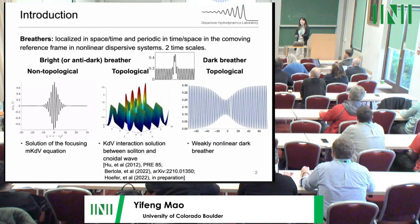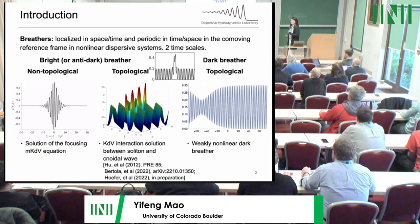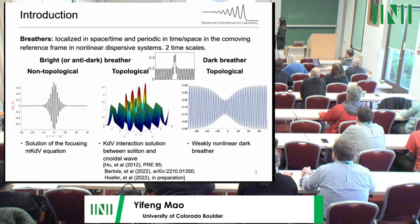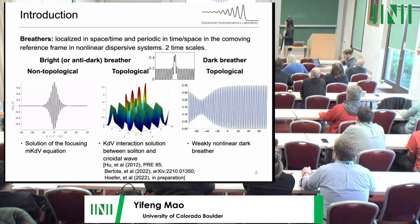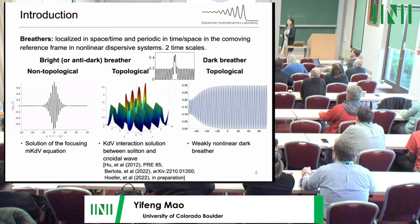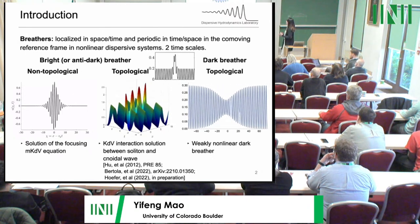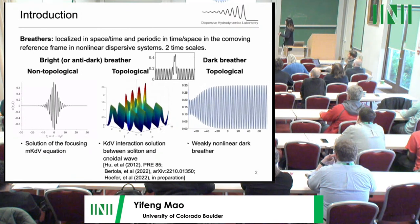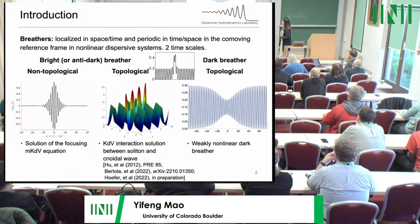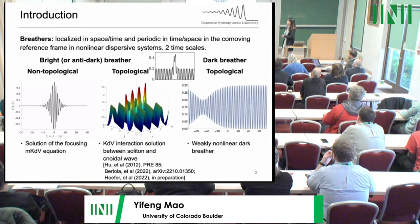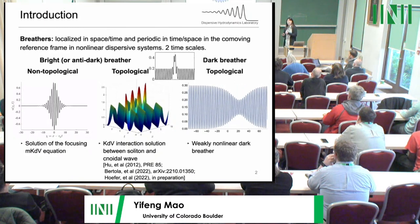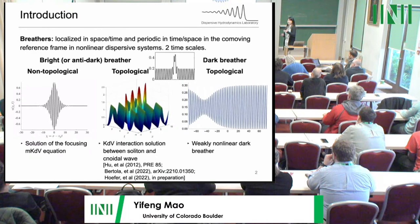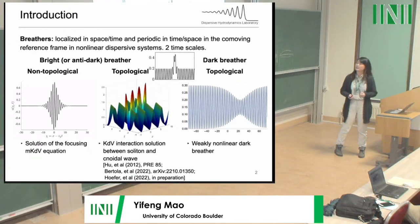There have been many nice talks about breathers, but I will give a brief introduction again. Breathers have localized disturbance in space or time and are periodic in the other dimension — in time or space — in the comoving reference frame. In nonlinear dispersive systems, they have two timescales: one associated with propagation and the other associated with the internal oscillation.